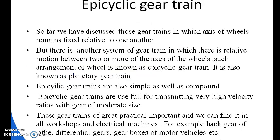The next train is the epicyclic gear train. In the gear trains discussed so far, the axes of the wheels remain fixed relative to one another. But in an epicyclic gear train, there is relative motion between two or more of the axes of the wheels. Such an arrangement is also known as a planetary gear train. Epicyclic gear trains can be simple as well as compound, and are used for transmitting very high velocity ratios with gears of moderate size.